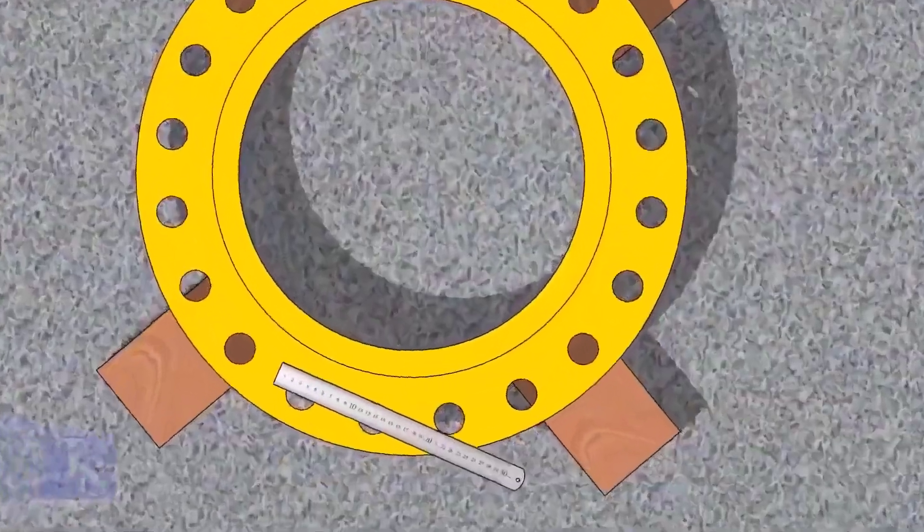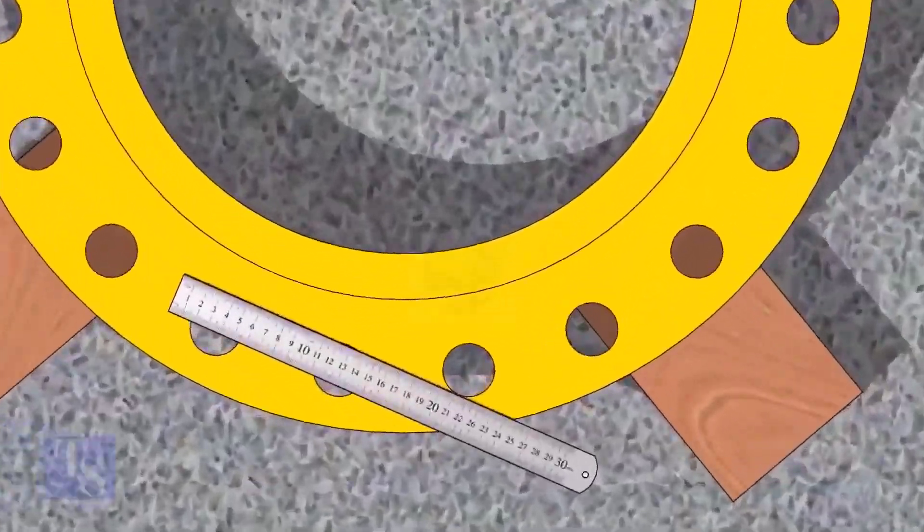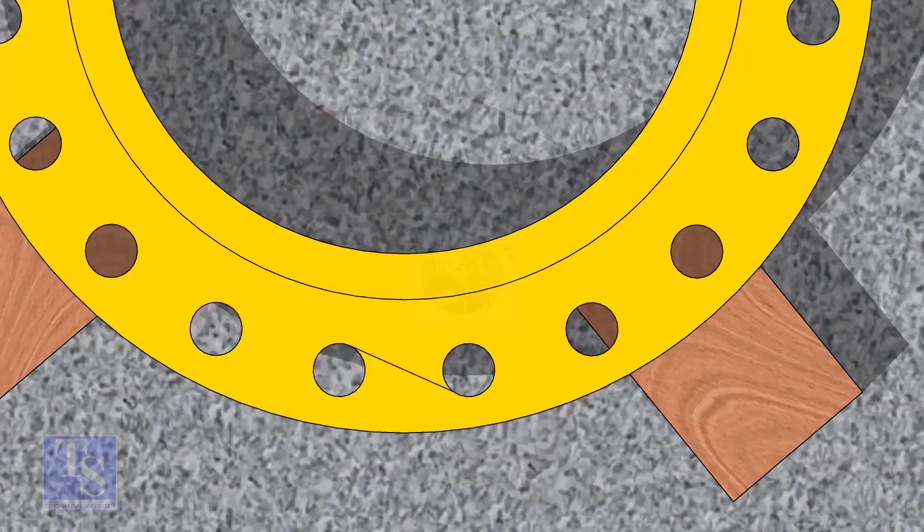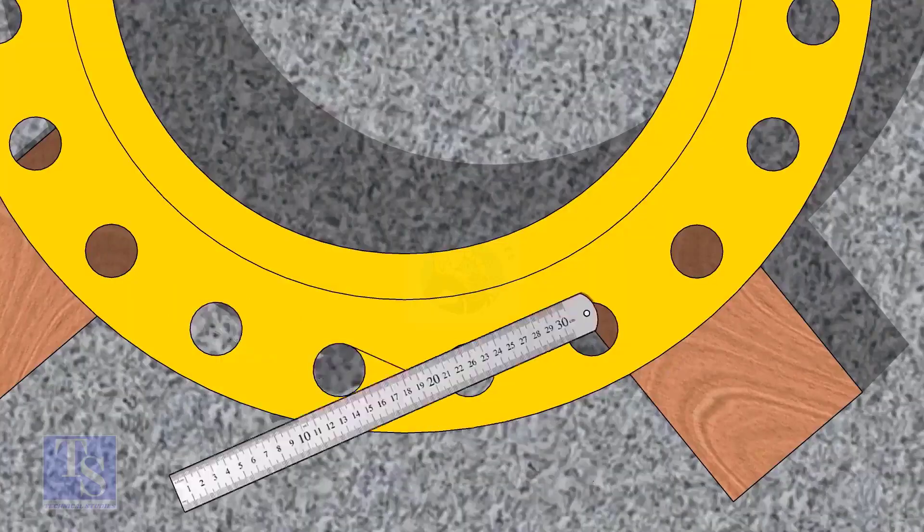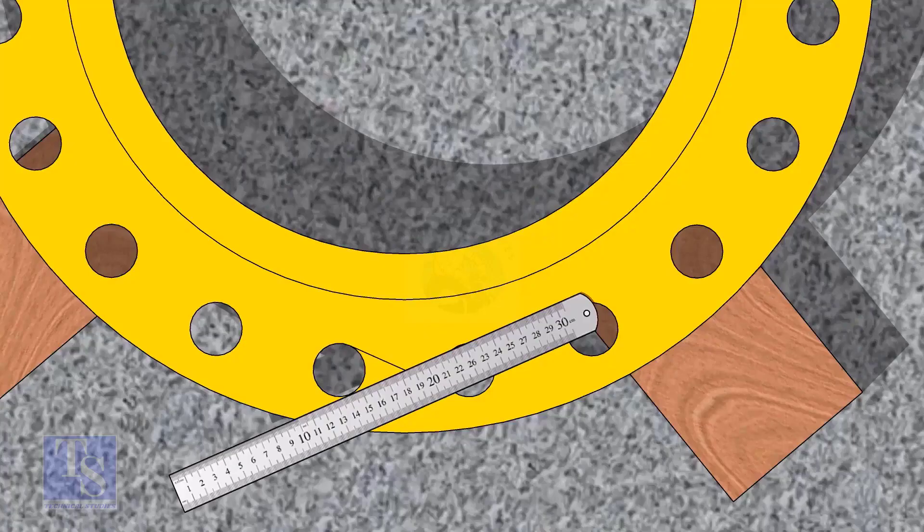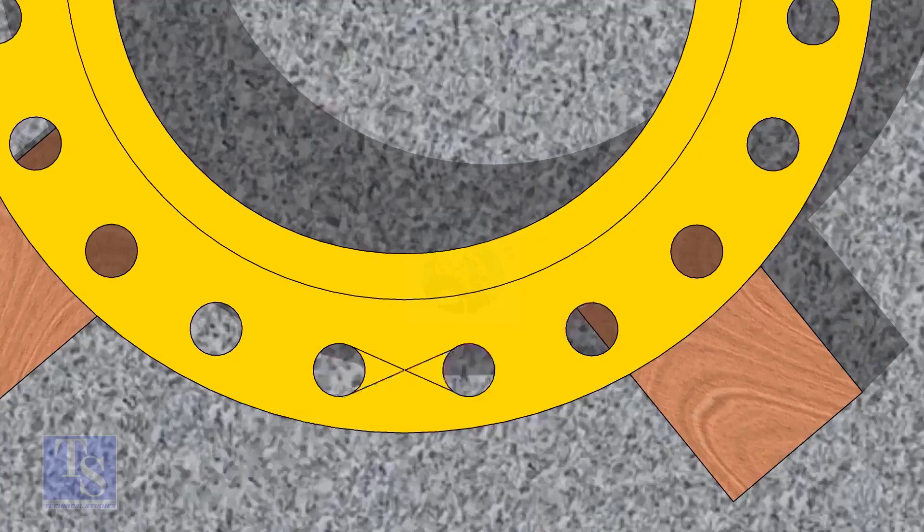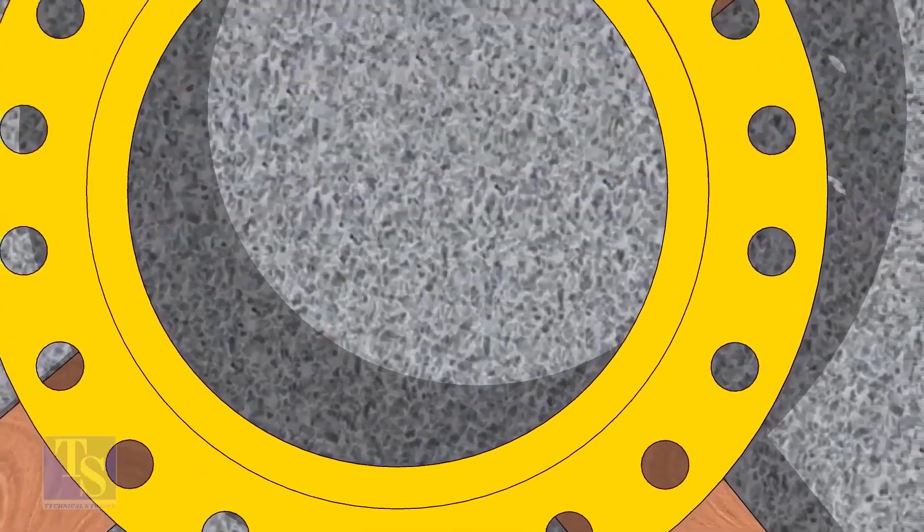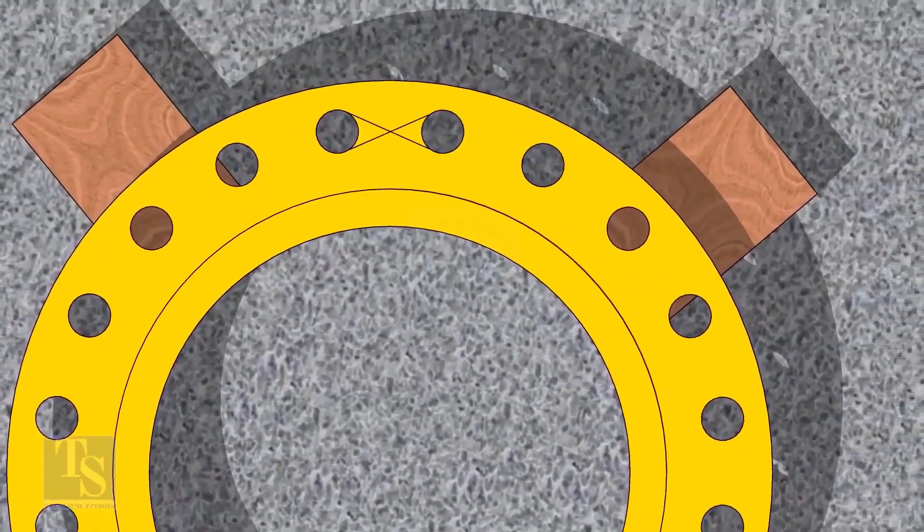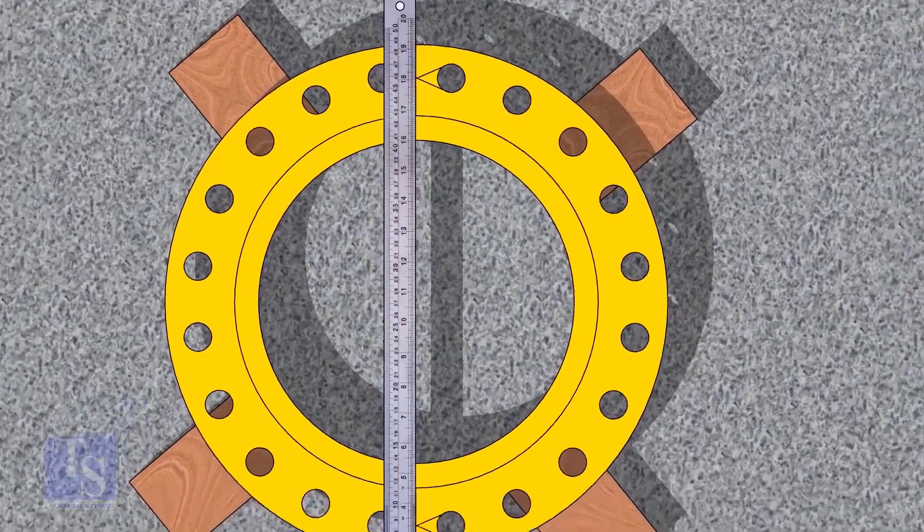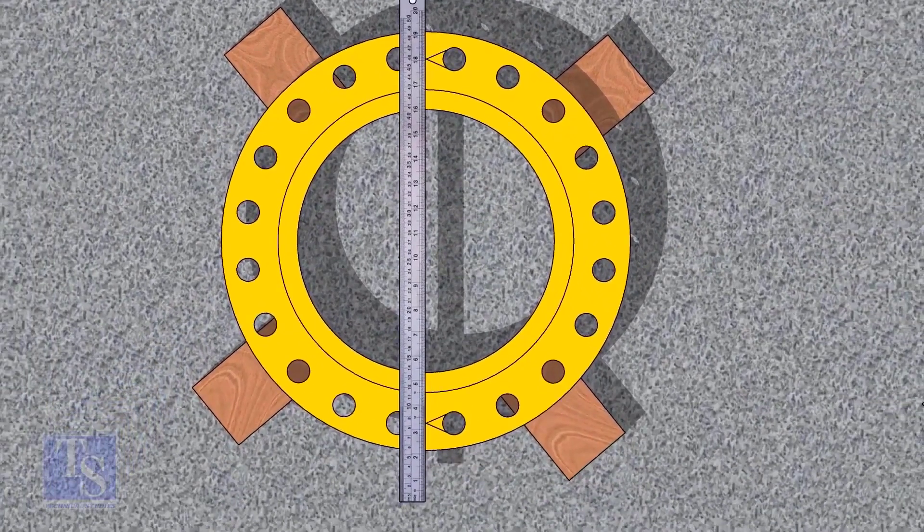Let us mark the center line of the flange. Draw tangential lines of two adjacent holes. The intersection of the lines is the center of these holes. Draw the center of the two holes on the opposite side. Draw the center line of the flange as shown.